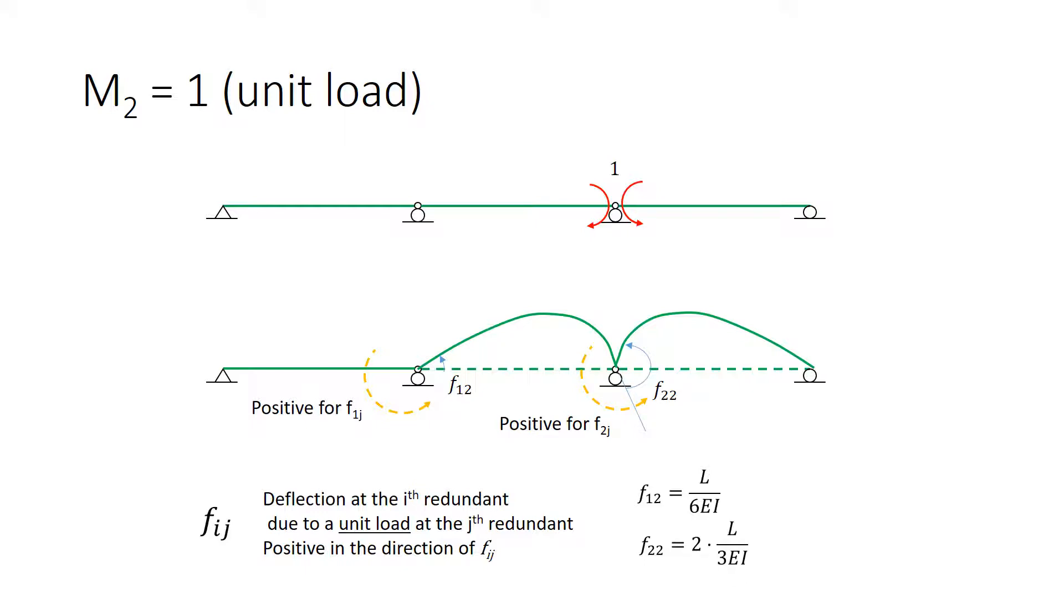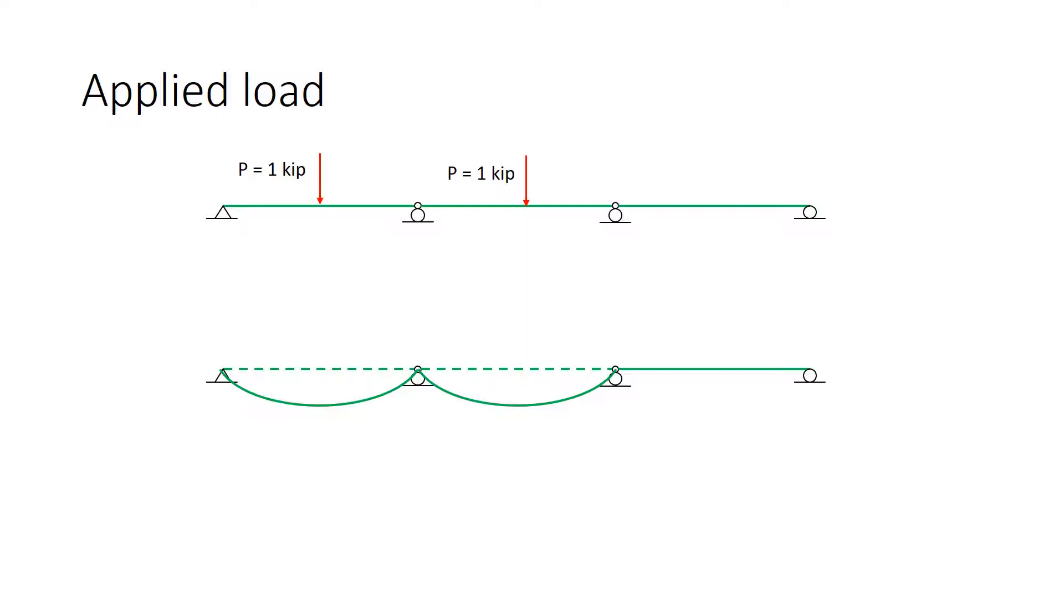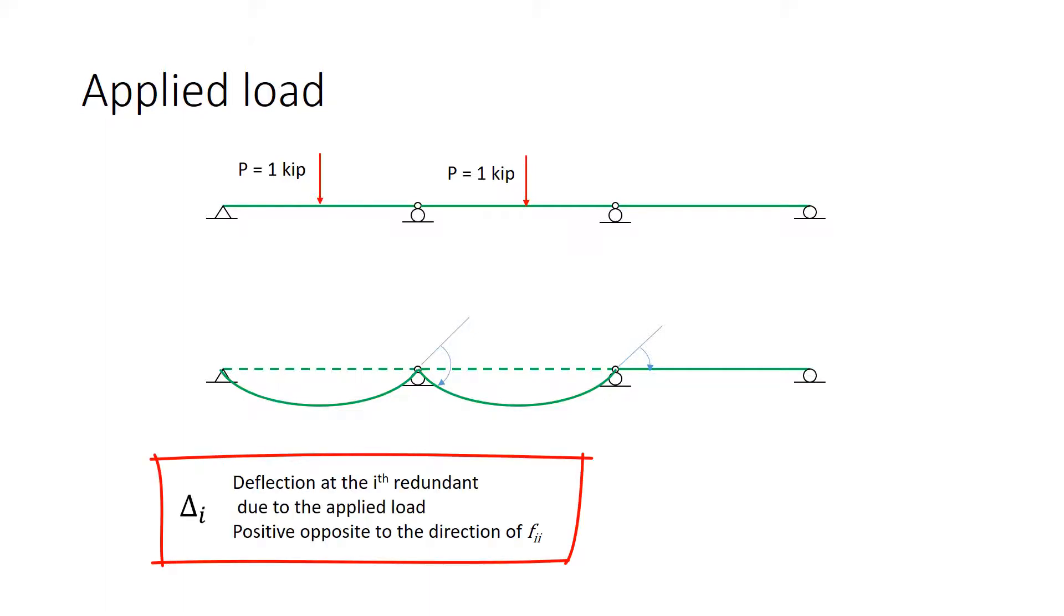Next, we move to the applied load. The applied load is shown on the primary structure, as is the deformed shape. We need to again identify the angles that we're looking for. The angles are the differences between the slopes on either side of the releases that are indicated here. And our notation is as follows. We will call these delta. The delta sub i is the deflection at the i-th redundant due to the applied load. Careful with the sign convention. The sign convention switches. These will be called positive if they're opposite to the direction of the F_ii's.